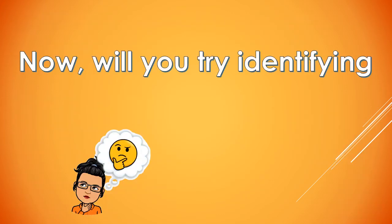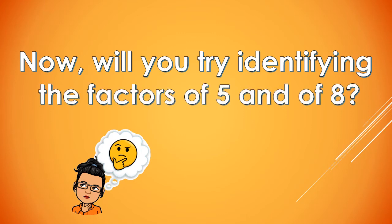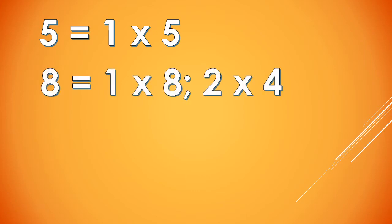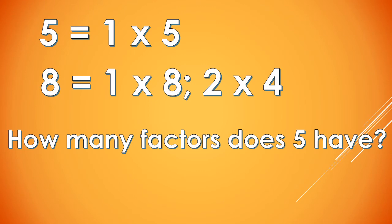Now, will you try identifying the factors of 5 and of 8? The factors of 5 are 1 and 5, or 1 times 5. And the factors of 8 are 1 and 8, and 2 and 4, or 1 times 8 and 2 times 4. How many factors does 5 have? We have 2 factors.